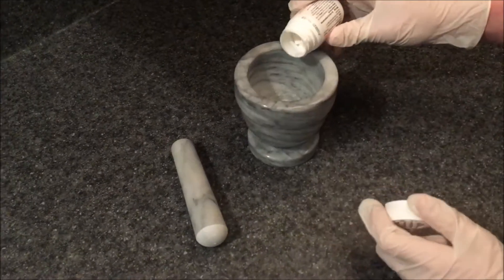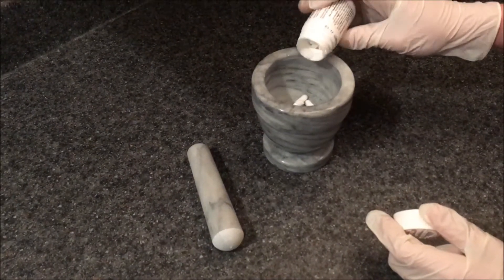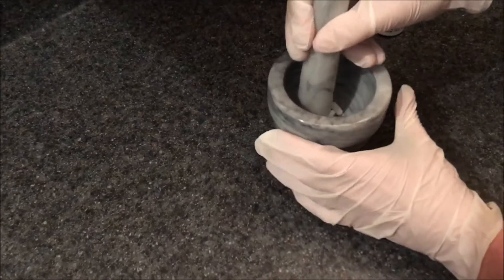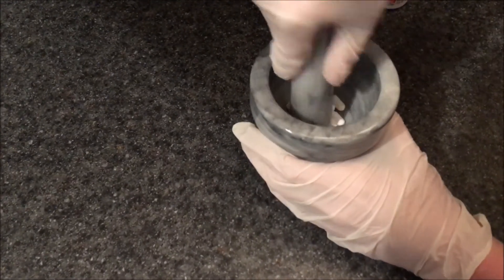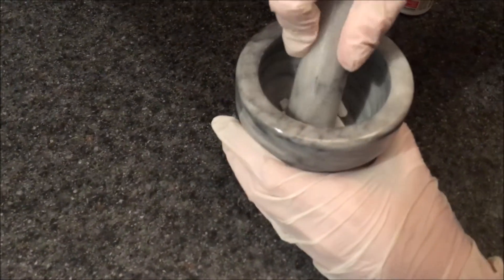The first step is to grind up your caffeine pills in either a mortar, pestle, or coffee grinder. The finer the powder, the better the extraction will go.